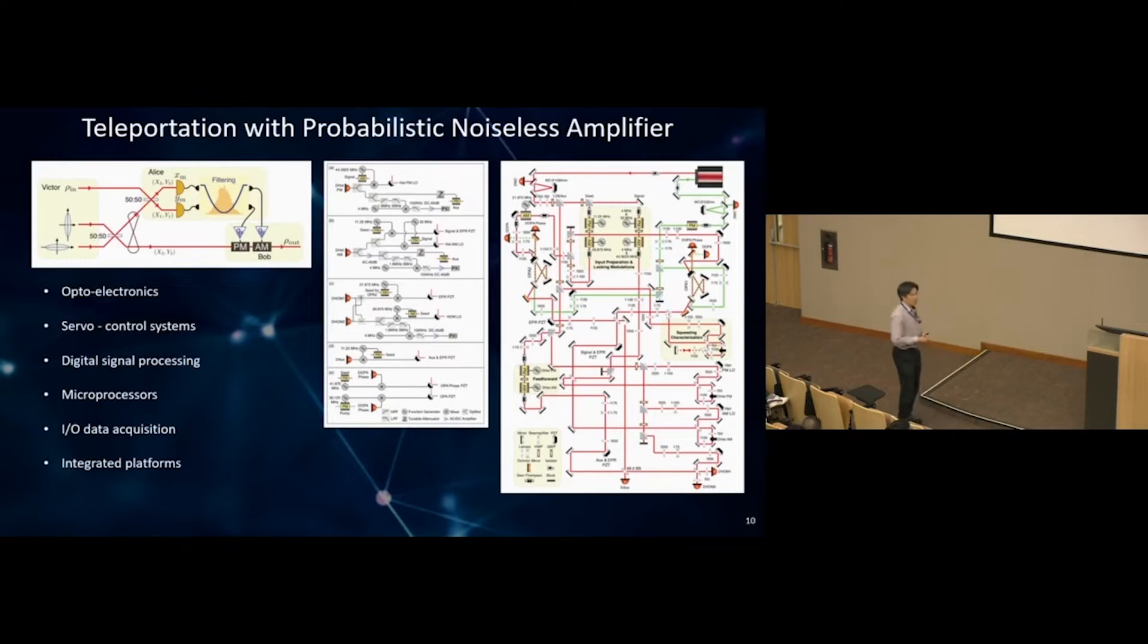When it comes to individual components, we talk about squeezed light and teleportation. We built this teleportation with probabilistic noiseless linear amplifier experiment. The schematic is already quite complicated with many electronic and optical components, nowhere close to Jianwei Pan's experiment. Fortunately, in modern PhDs we have lots of help: servo control, digital signal processing, microprocessors, IO cards, and integrated platforms. I'd like to add one more useful tool: AI deep learning.